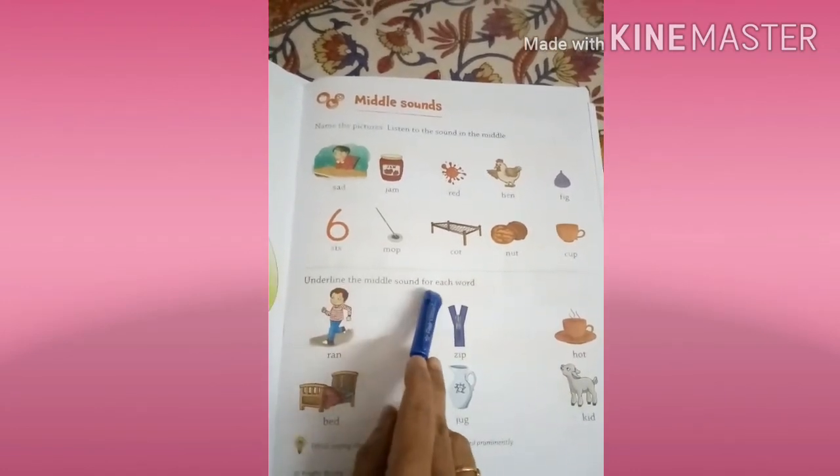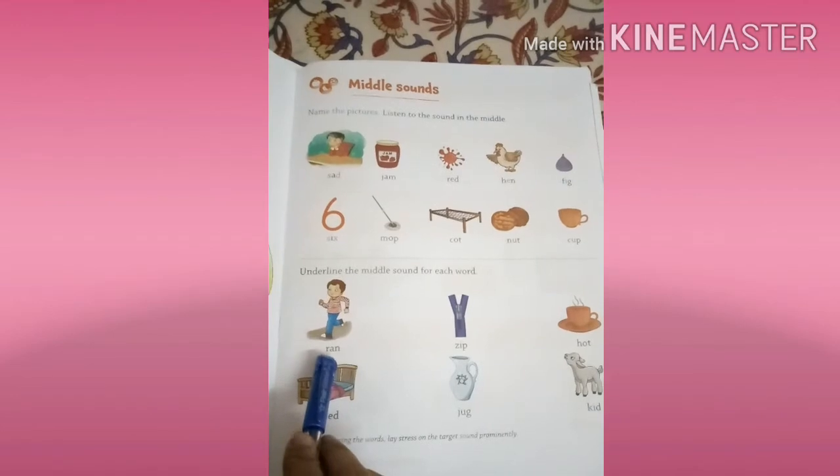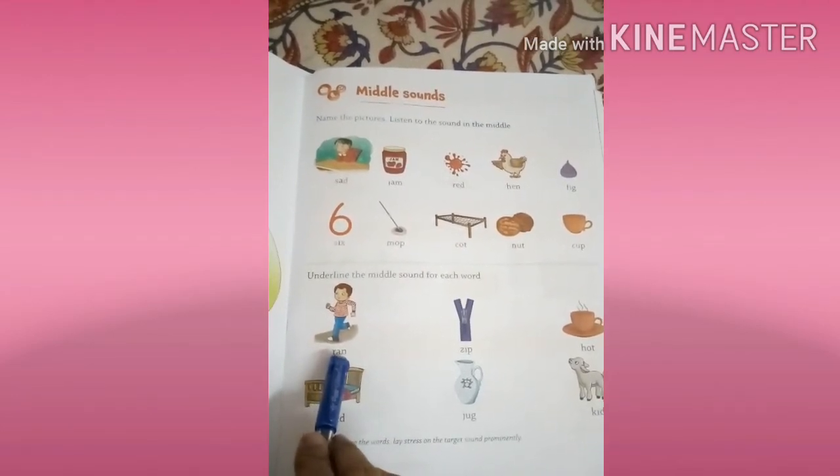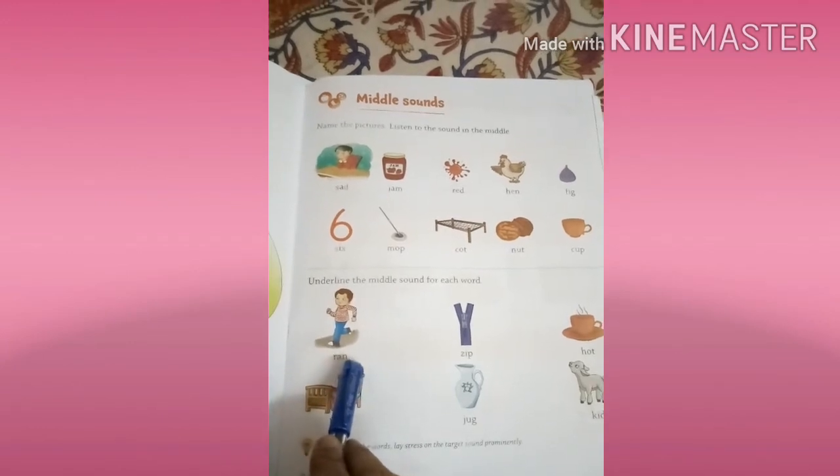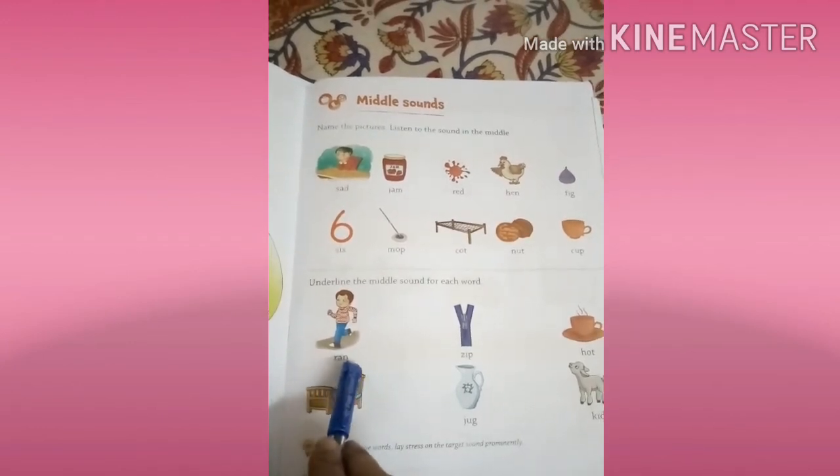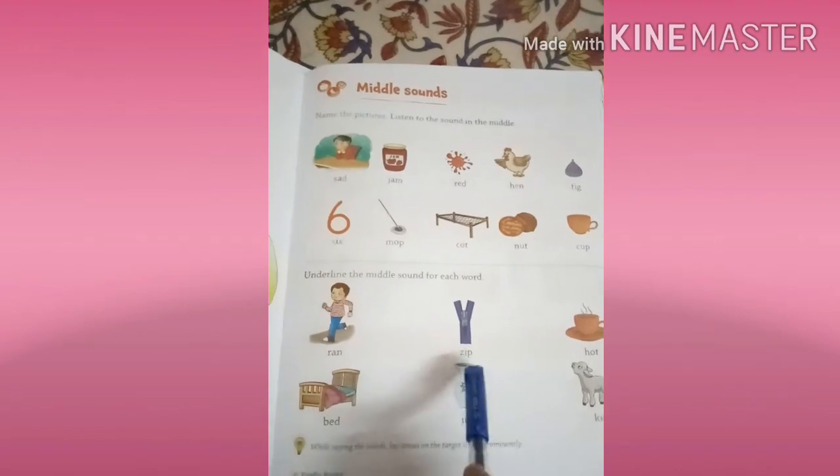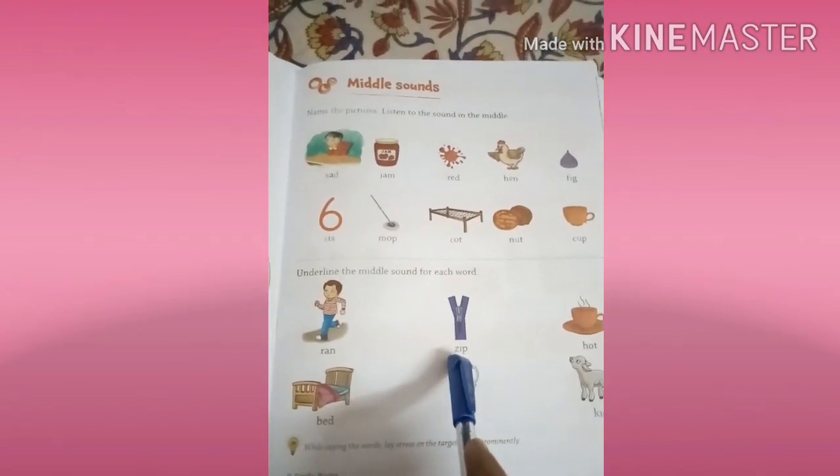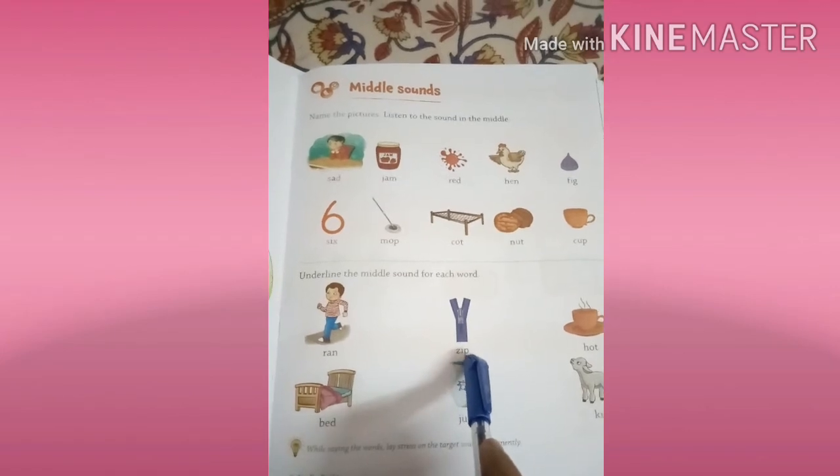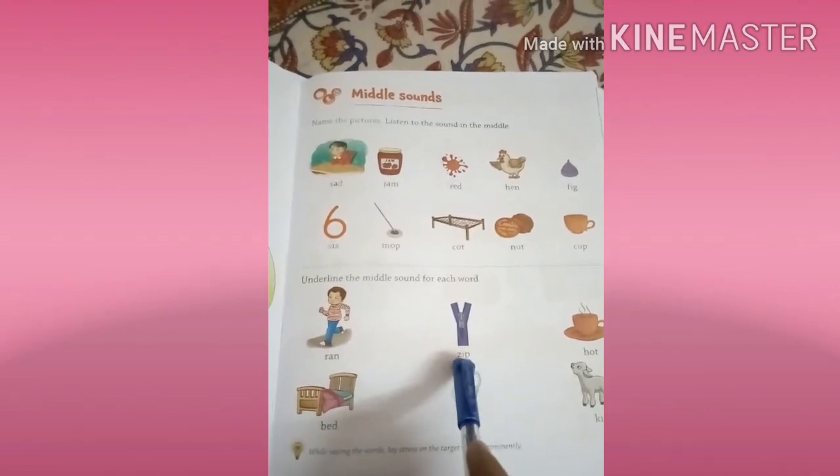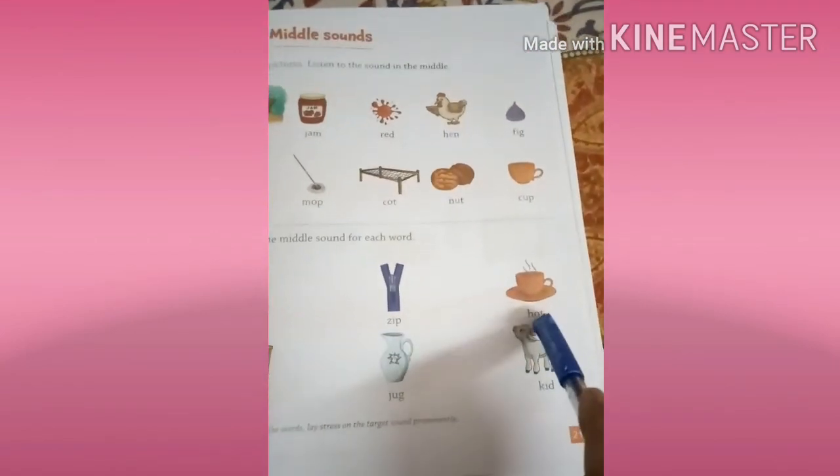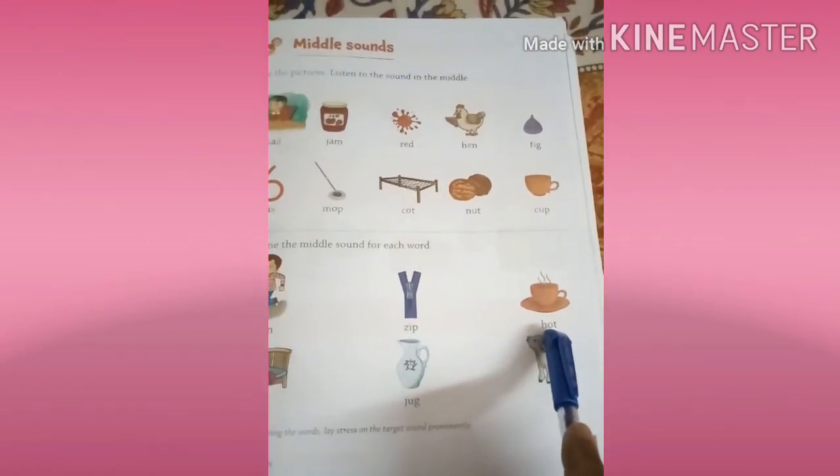R-A-N ran. R sound is R, A sound is A, N sound is N. R-A-N, ran. Z-I-P. Z sound is Z, I sound is I, P sound is P. Z-I-P, zip, okay.